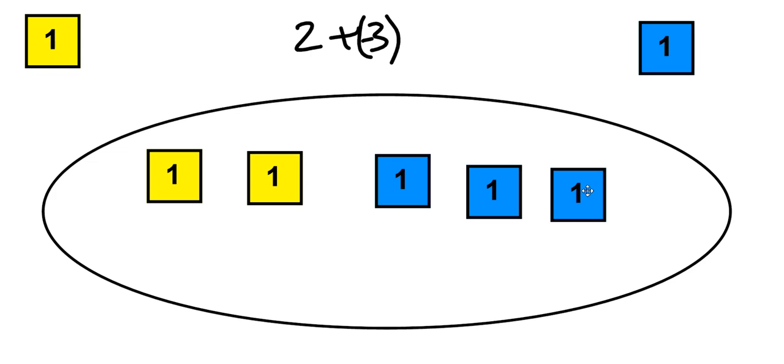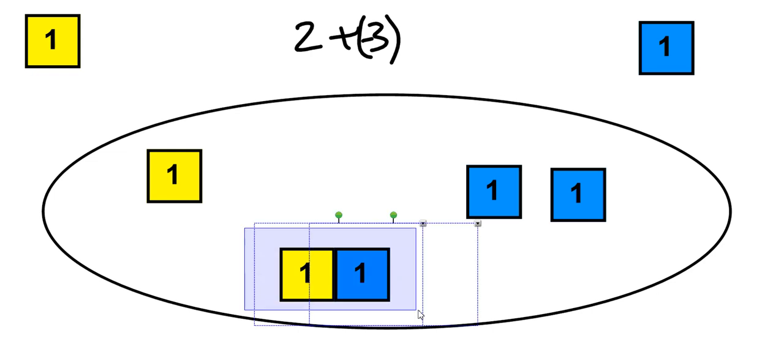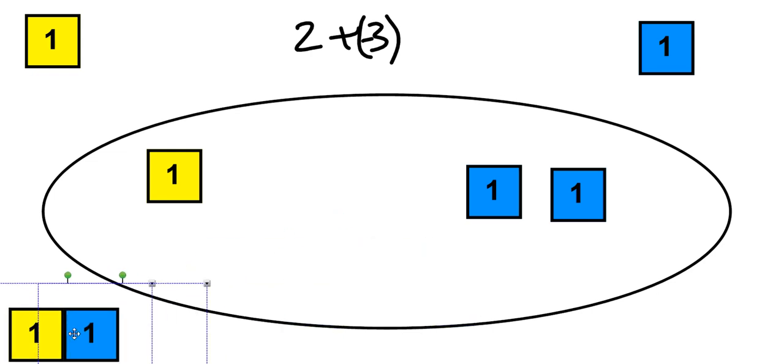Well, the key thing to show children in this scenario, and the key thing to understand for ourselves, is that a positive one and a negative one together, that's zero. Positive one and negative one - you can remove a zero pair without changing the value inside our play area.